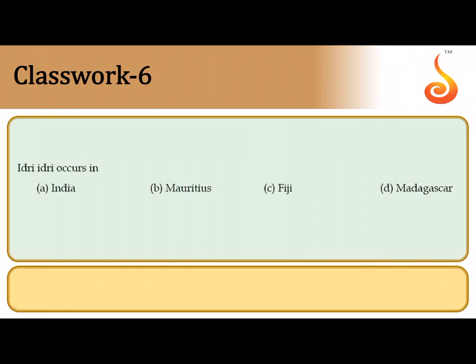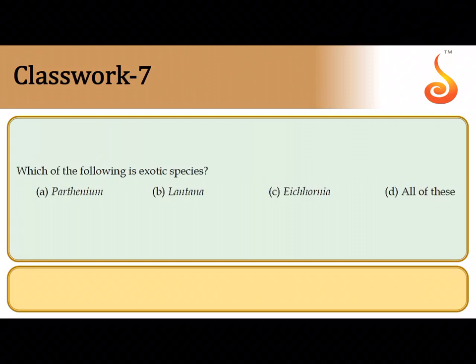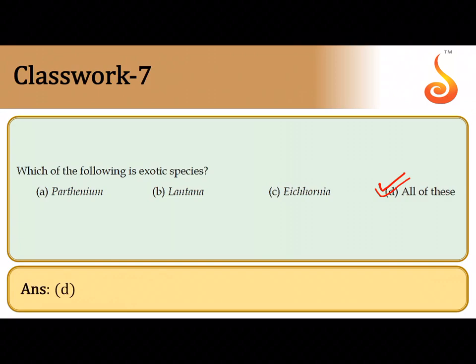The sixth question: Indri indri is actually the largest lemur — the giant lemur of Madagascar — so it is option D. The seventh question asks which of the following is an alien or exotic species. Parthenium hysterophorus, which is carrot grass, Lantana camara, and Eichhornia crassipes, the water hyacinth, were all accidentally introduced into our country. They have overridden local populations and pose a threat to local species, making them exotic species. The correct answer is option D.